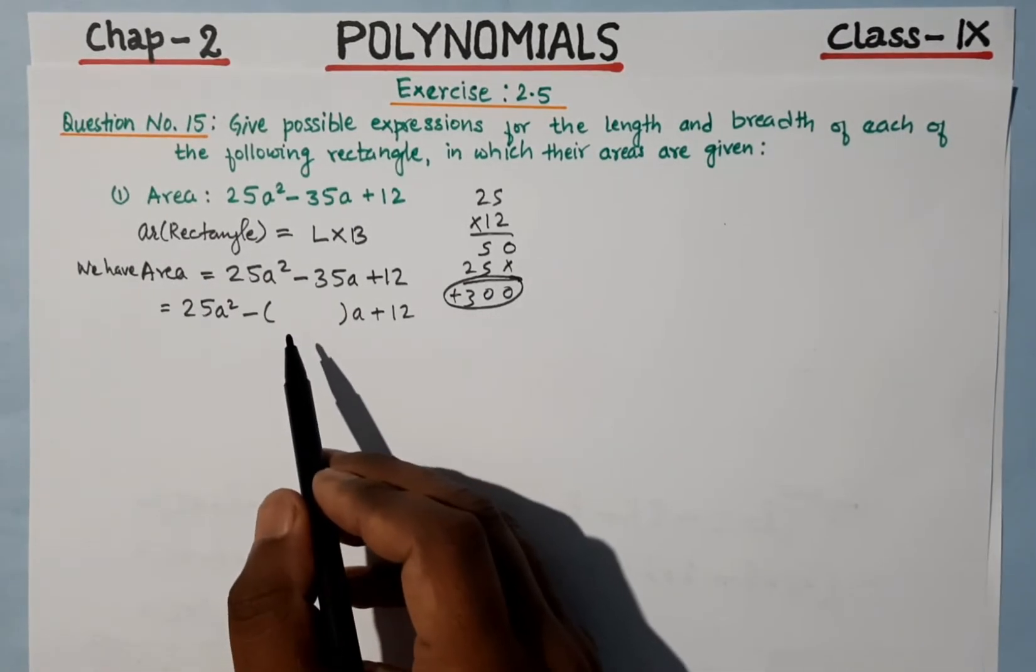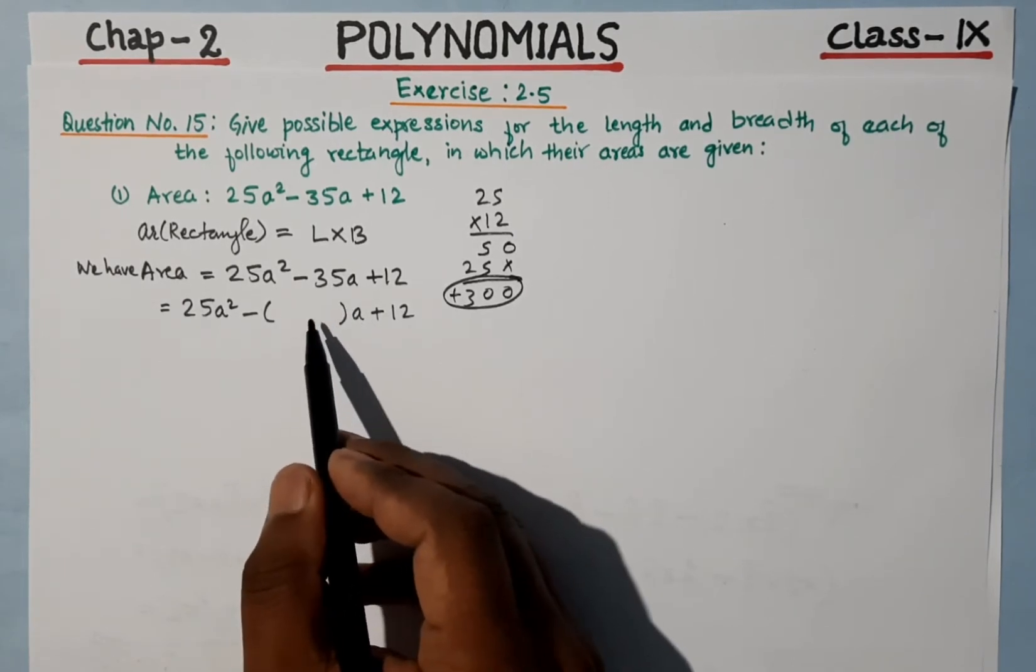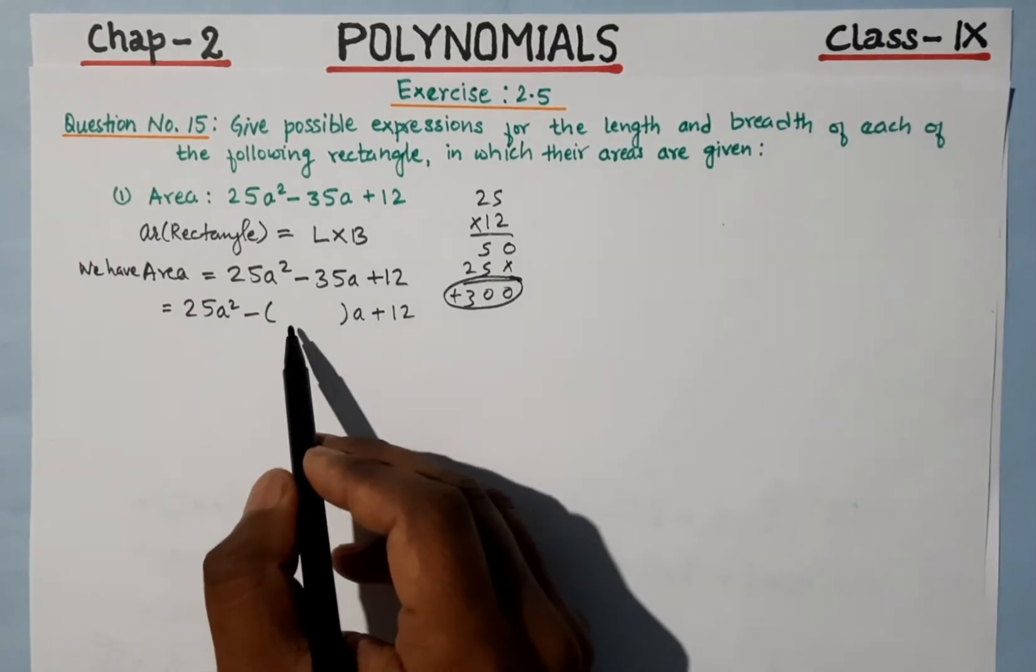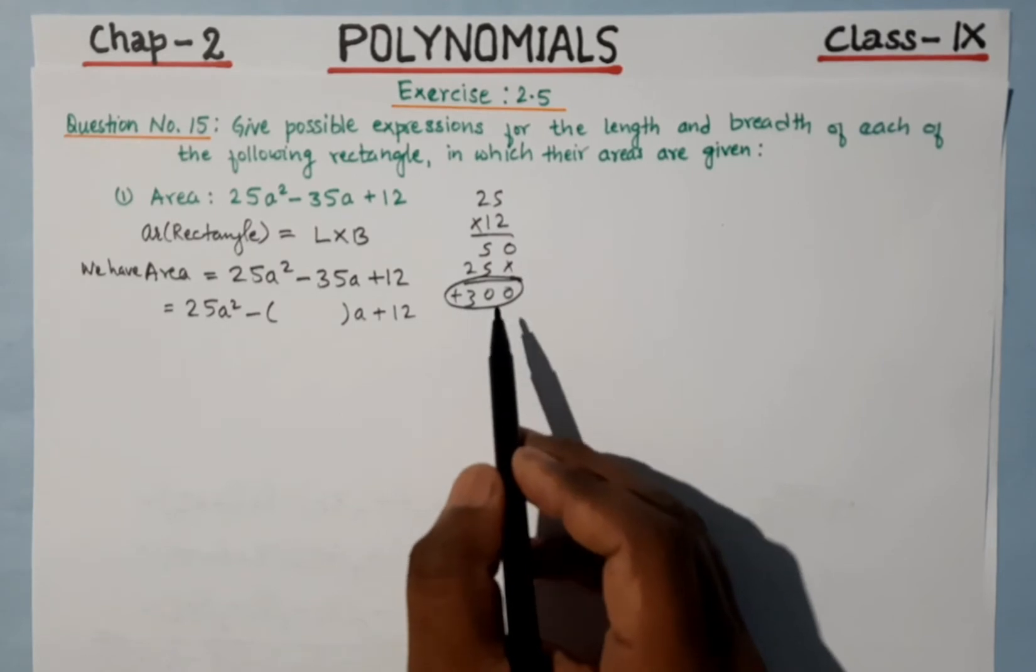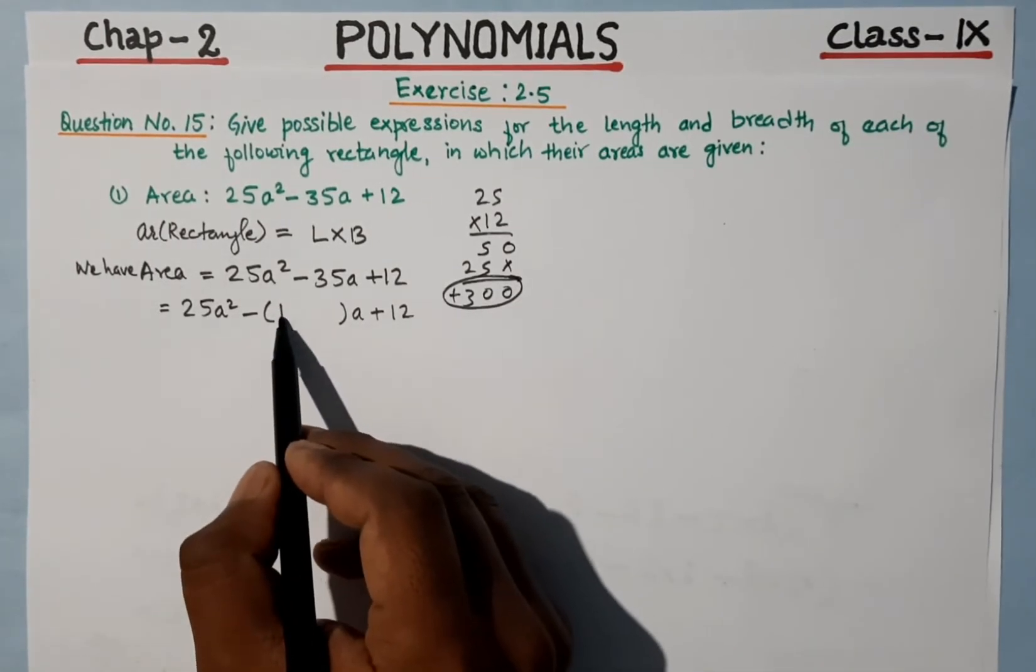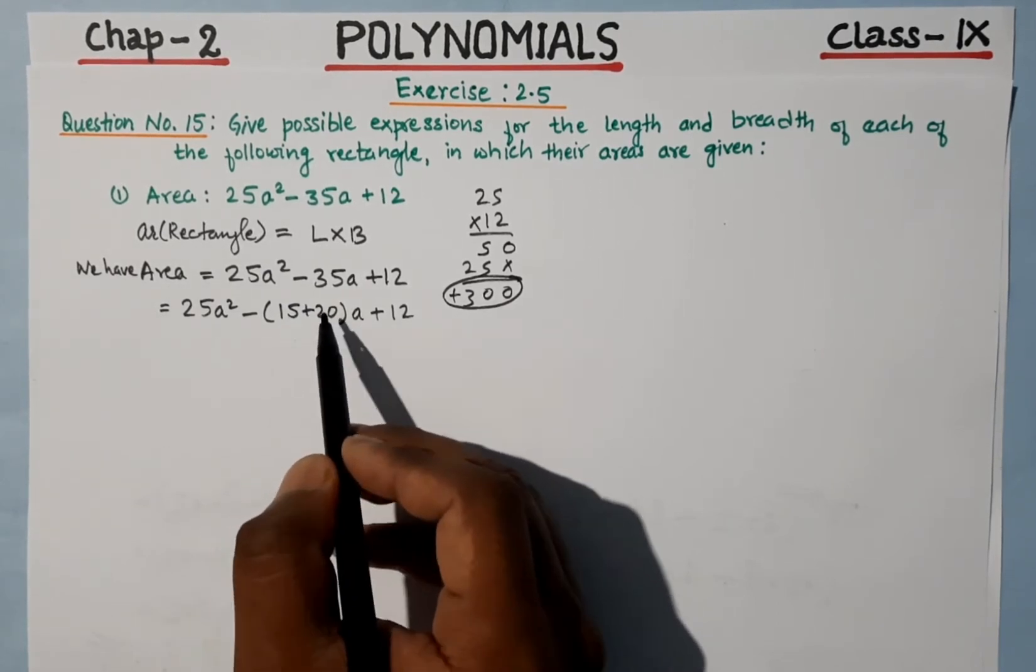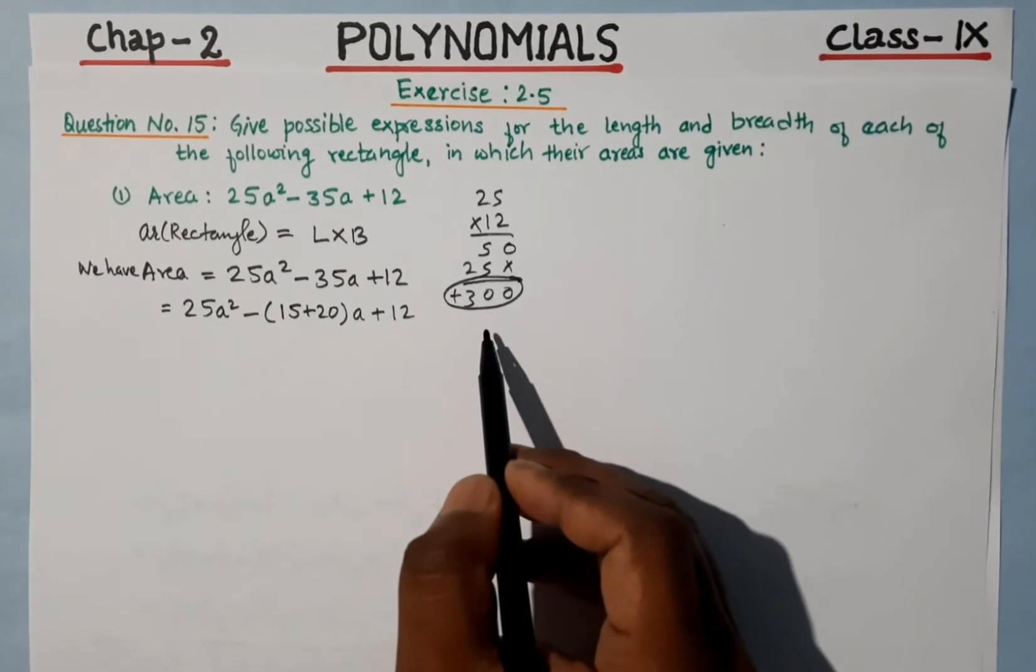We need to find two numbers that add to 35 and multiply to 300. If we test, we will get 15 plus 20. 15 plus 20 is 35, and 15 into 20 is 300.